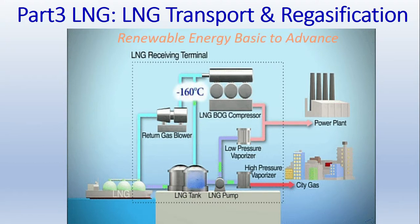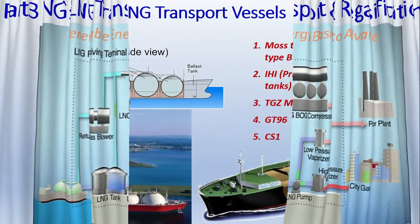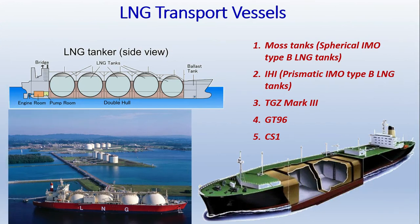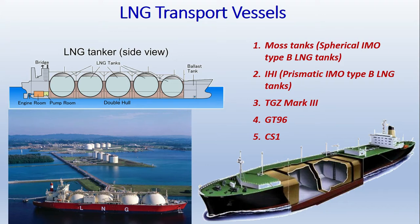This is the final part of our LNG series. Based on the construction of LNG transportation vessels, there are two types of vessels prominent in the market: one is the membrane type, and the other is the self-supporting or spherical IMO type. The IMO type spherical vessel is a very robust and rigid construction. Based on the manufacturers, we have the MOS tank spherical IMO type B LNG vessels.